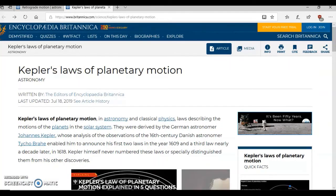Today they use Kepler's laws of planetary motion to explain our solar system. Again from the Encyclopedia Britannica it says Kepler's laws of planetary motion in astronomy and classical physics laws describing the motions of the planets in the solar system. They were derived by the German astronomer Johannes Kepler whose analysis of the observations of the 16th century Danish astronomer Tycho Brahe.